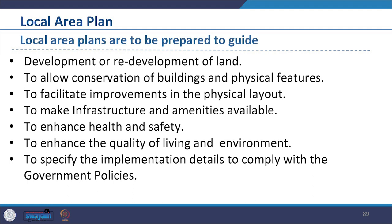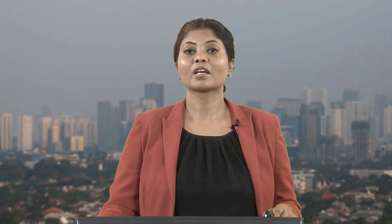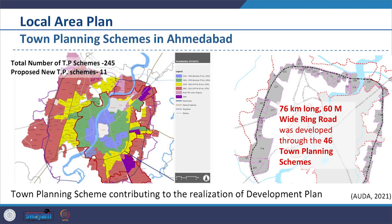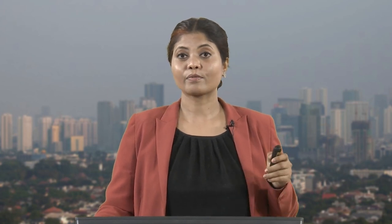Local area plans need to specify implementation details to comply with government policies, and are prepared for 5 to 20 years with intermediate reviews. Examples include town planning schemes, zonal plan or subsidiary plan, ward committee plan, coastal zone management plan and urban redevelopment plan. We are looking at the number of town planning schemes in Ahmedabad which contributed to realizing the goals of the development plan, and zonal plans inclusive of many urban redevelopment plans in Delhi which contributed to realizing the goals of Master Plan 2021.